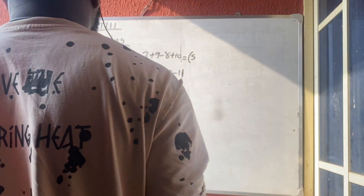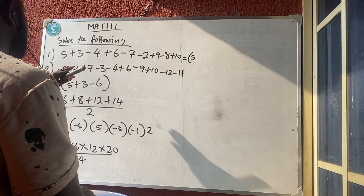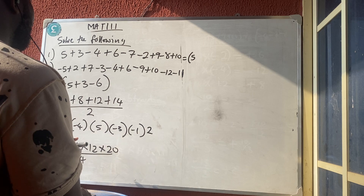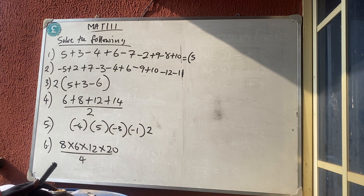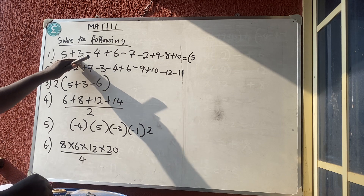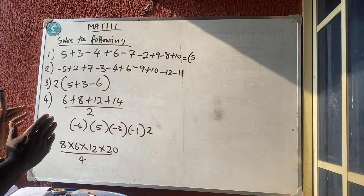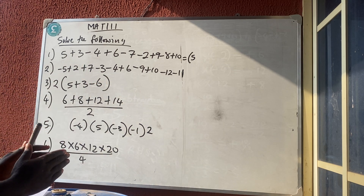Good morning and welcome to Master Talker online class. Today we'll be solving simple arithmetic process questions. The first step: bring all the positive numbers to one side, separated by a plus sign, and bring all the negative numbers to the other side.